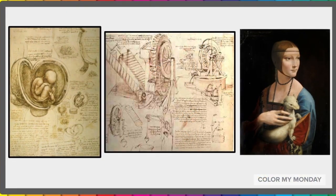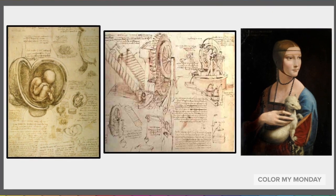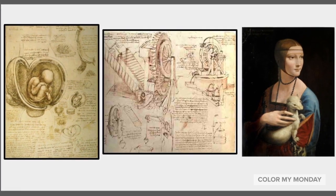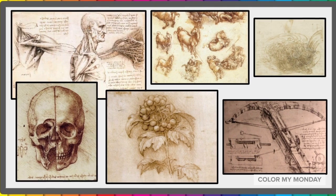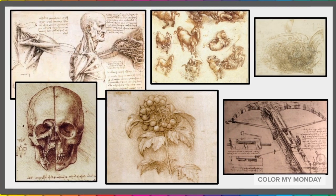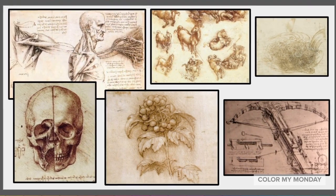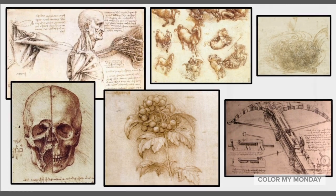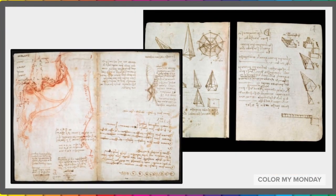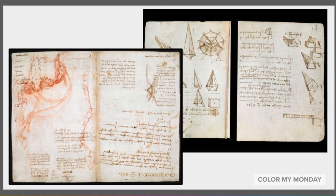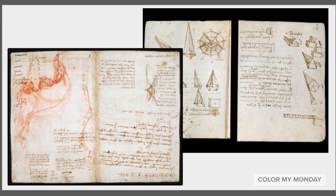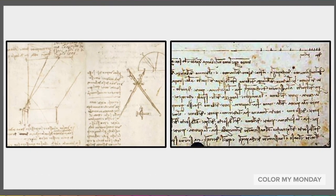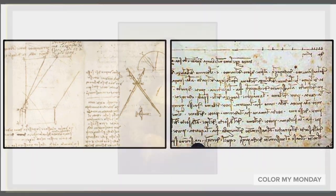Leonardo da Vinci was the epitome of a renaissance man because his genius crossed so many disciplines. He was a lifelong student. He studied human anatomy, physics, chemistry, plants, and animals. Over the course of his life, he filled more than 7,000 pages with sketches and writing. He would write his notes backwards so they could only be read through a mirror.